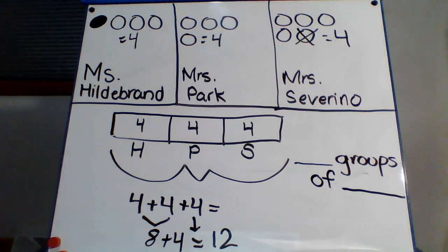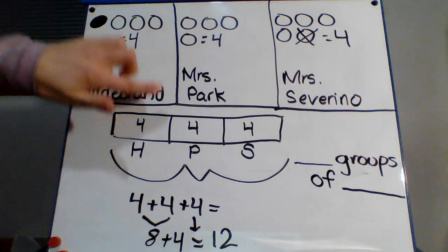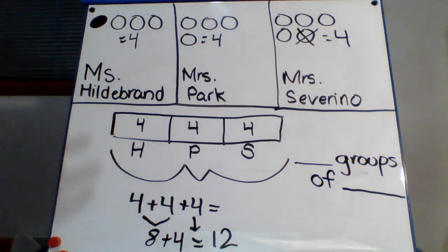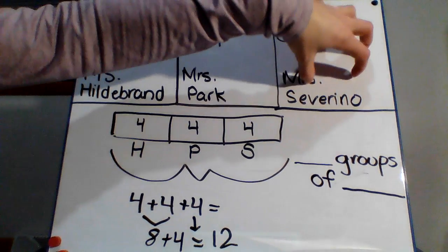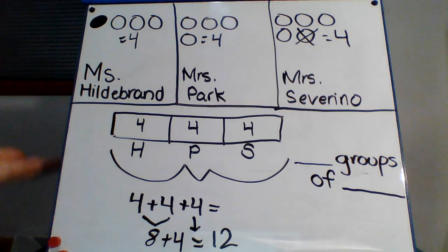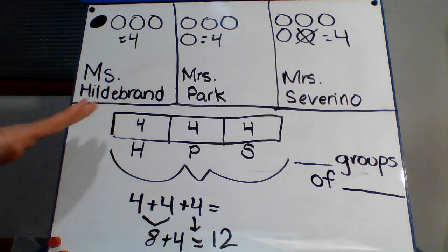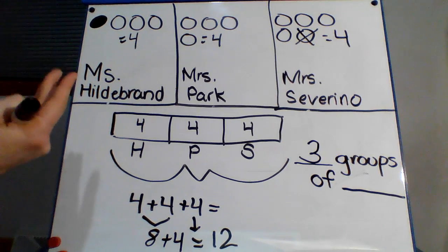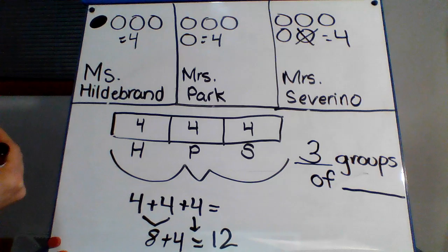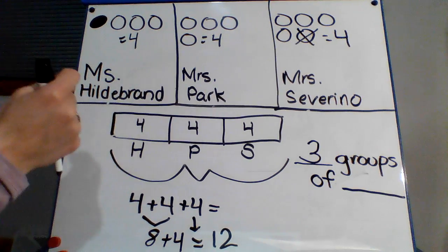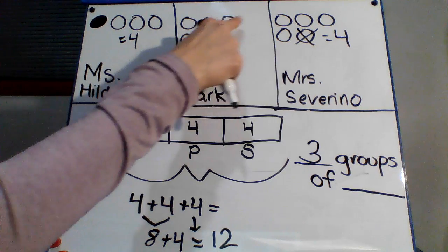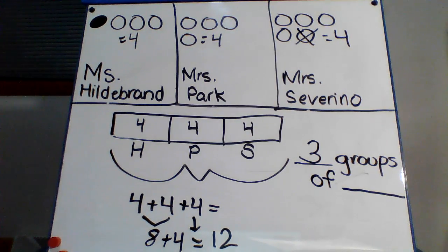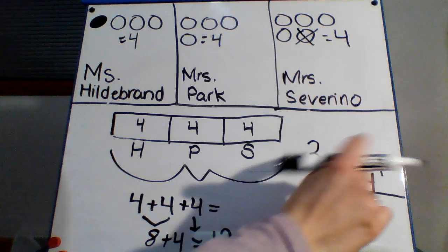How many groups do you have? Now this is a little different because we didn't actually draw groups, but you can see that Miss Hildebrand did box in. So Miss Hildebrand is a group, Miss Park is a group, and Miss Severino is a group. So how many groups do you have? So how many teachers are there sharing? And you can count. There's one, two, three teachers, or three groups. And then, remember, we change it so it would be equal, and we have three groups of each teacher has how many beads? They have four beads. So it's three groups of four.